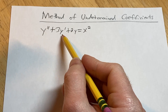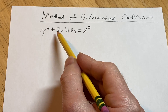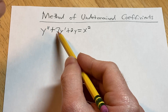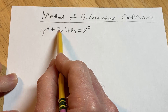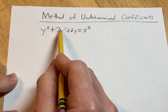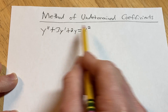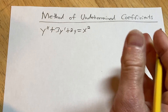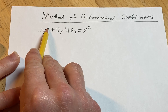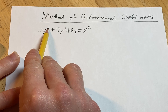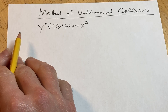It's linear because it's linear in y and its derivatives — you don't see any y variables being multiplied by each other, no functions like y times y prime, and y and all its derivatives are to the first power. It's higher order because the order is 2, which is the order of the highest derivative.